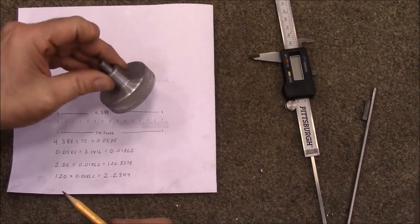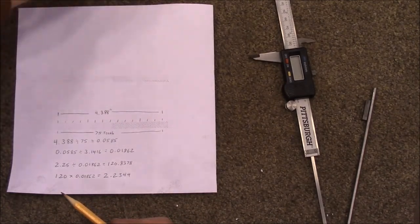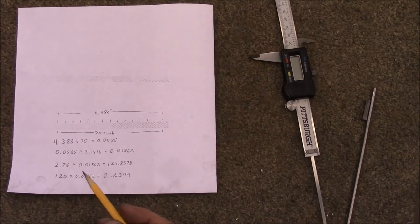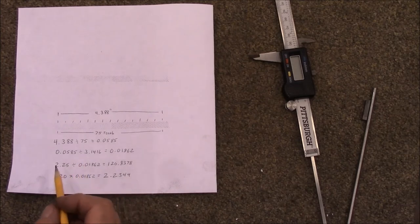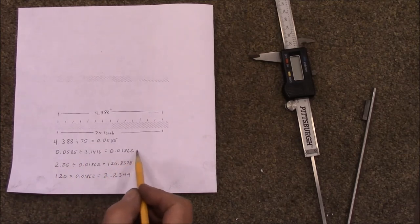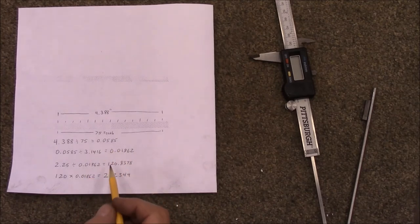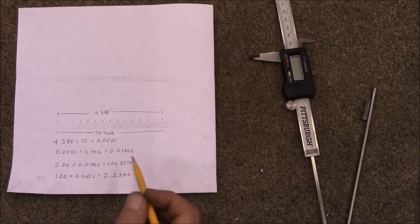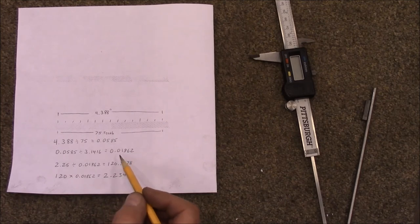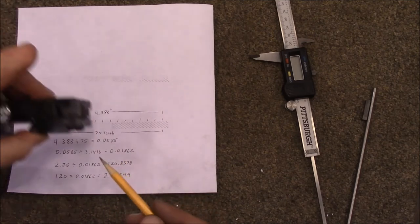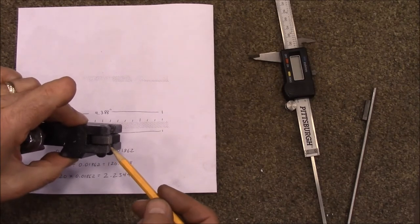So the diameter of them was two inches and 250 thousandths. So I wanted to start with a 2.25. You divide that by this number right here, and that gives you 120.8378.